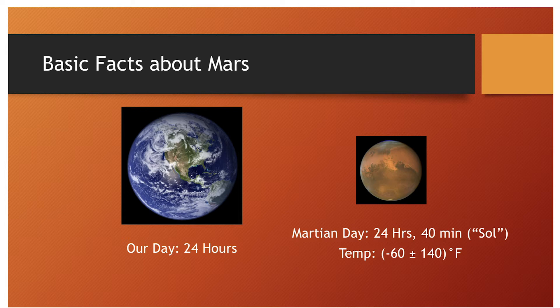Our day is 24 hours. The Martian day is just a little bit longer than that. In the movie, they throw around the word 'sol' — that's a Martian day, but it's pretty close to an Earth day. The sun rises and then how long it takes for the sun to rise again on the Martian surface is pretty close to an Earth day.